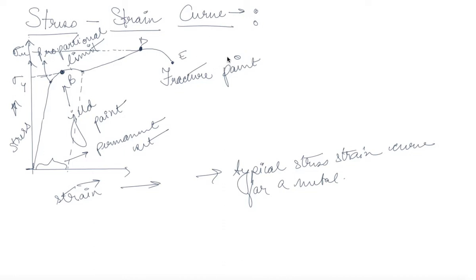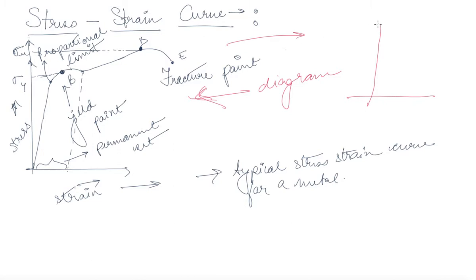Let's understand the stress-strain curve for a typical metal. You will see this diagram in your book. Let's have an explanation of this diagram. First, we'll draw the y-axis and x-axis. On the y-axis I have stress, and on the x-axis I have strain.